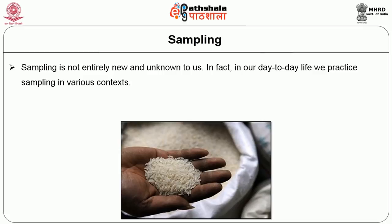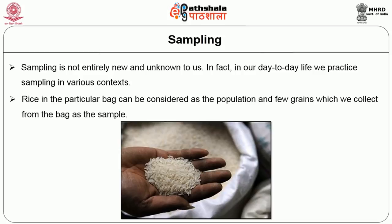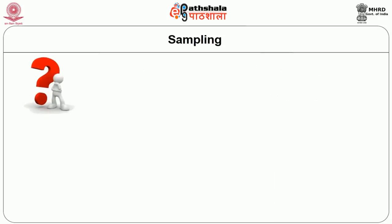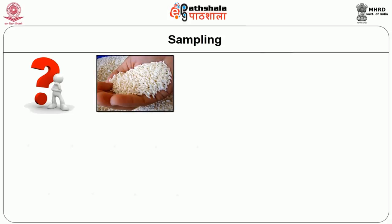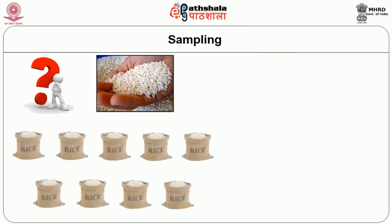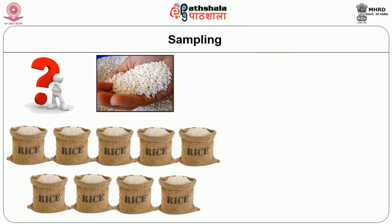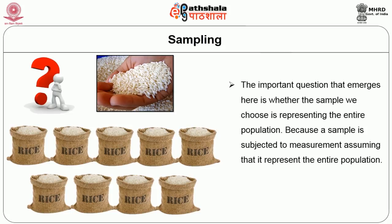Take the example of buying rice from a grocery store. How do we judge the quality of grains in a bag of rice? We just take a handful of rice grains from the bag and decide the quality. Here, the rice in the bag can be considered the population and the few grains we collect as the sample. But is sampling such a simple exercise? It is not, because how do we know that the handful of grains represents the grains in the entire bag? If there are 10 bags of rice, can this handful from one bag determine the quality of all 10 bags? The important question is whether the sample we choose is truly representing the entire population.